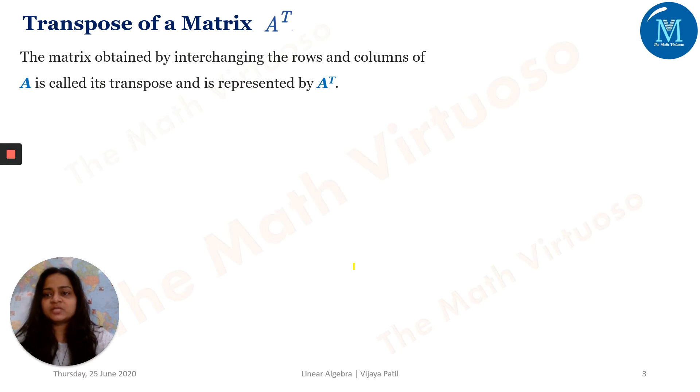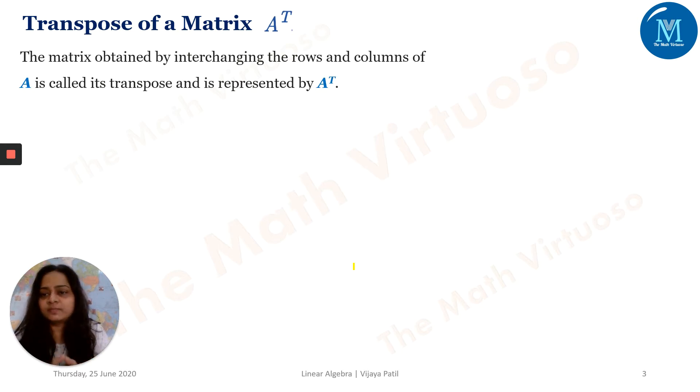Transpose of a matrix is nothing but it's obtained by interchanging the rows and the columns of A. It's called the transpose.